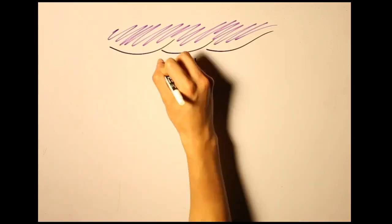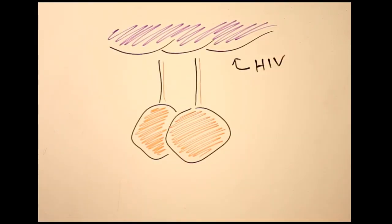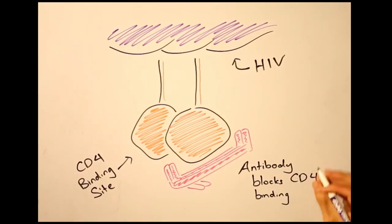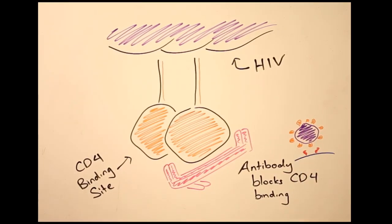This neutralizing molecule resembling an antibody with a tail blocks both the CD4 and CCR5 binding sites on HIV, rendering the virus useless and allowing the human immune cells to take care of the rest.